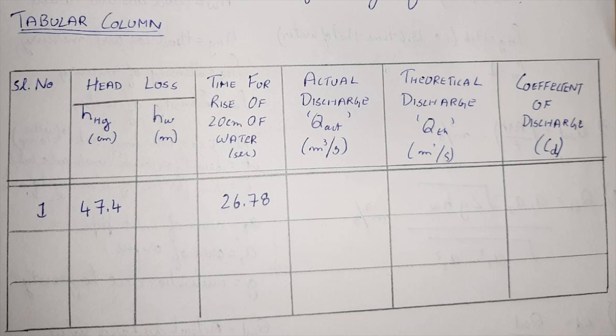The tabular column for the orifice meter experiment is as shown. It consists of six vertical columns. First one is serial number and second is head loss. The head loss for orifice meter is first noted in terms of mercury, hence the column is filled. The third column is time taken for rise of 20 centimeter of water.